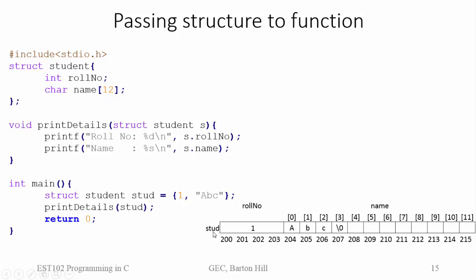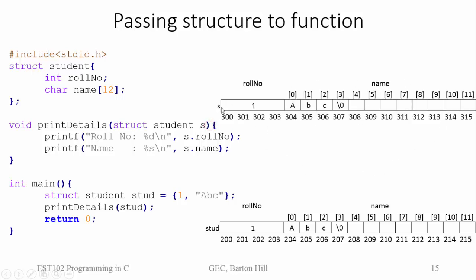The value inside student is stored in the formal parameter s, so a new variable s is created and memory is allocated for it. The values from student are copied into s — role number 1 and name 'abc'. Since we are copying the value from actual argument stud to formal argument s, any changes made in s, such as changing s.rollnumber or s.name, will not affect the actual argument stud. This is how we pass a structure parameter using the call by value method.